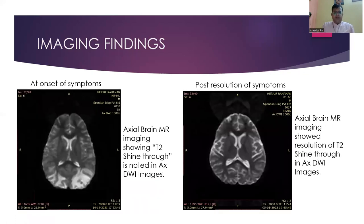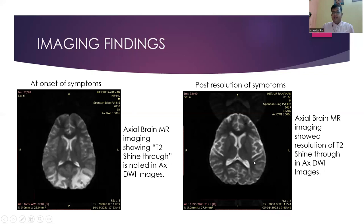And lastly, we come to DWI images. In DWI images, as we can see clearly here, at the onset of symptoms there is an area of hyperintensity, which is actually the T2 shine-through, noted here, and which has resolved post-resolution of symptoms.